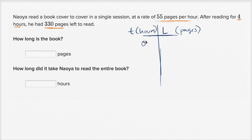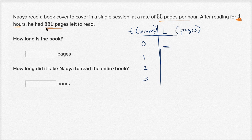At zero hours, we don't know how many pages he has left to read — but if we knew that, the pages left to read at time zero would be the entire book, answering the question of how long the book is. They do tell us that after reading for four hours, he had 330 pages left to read. So at T=4, L=330 pages.